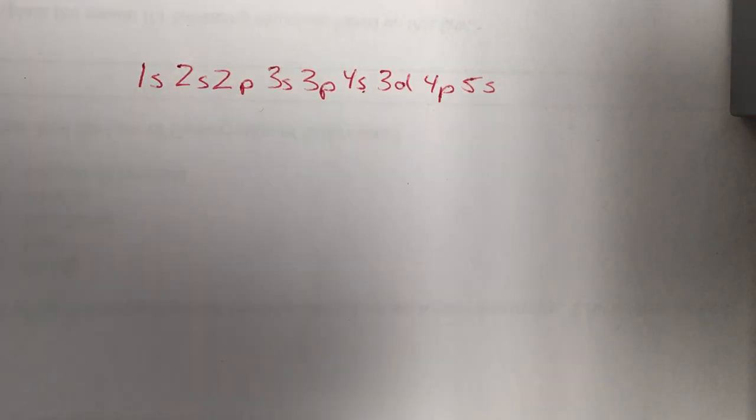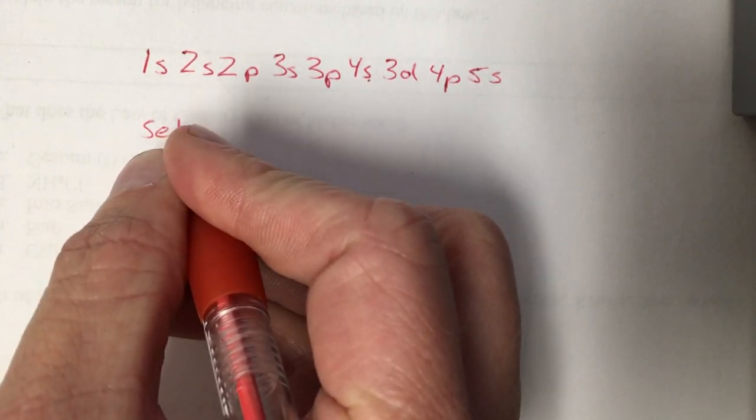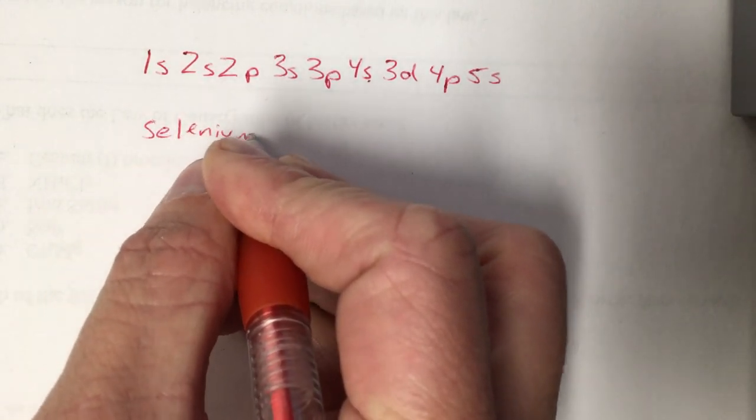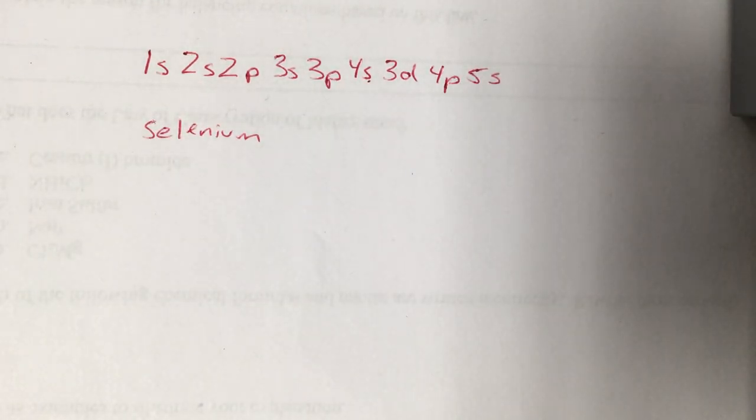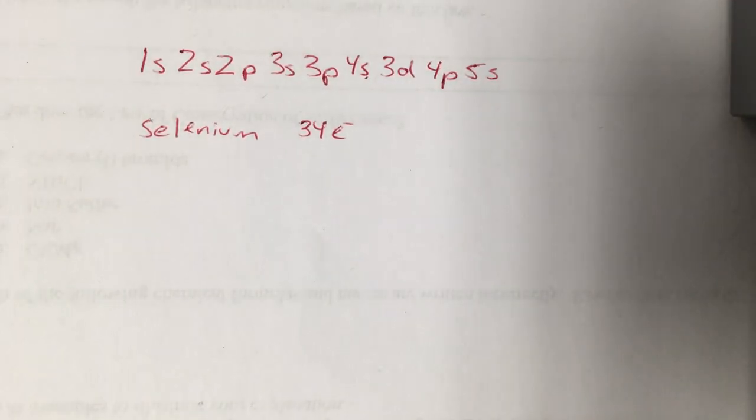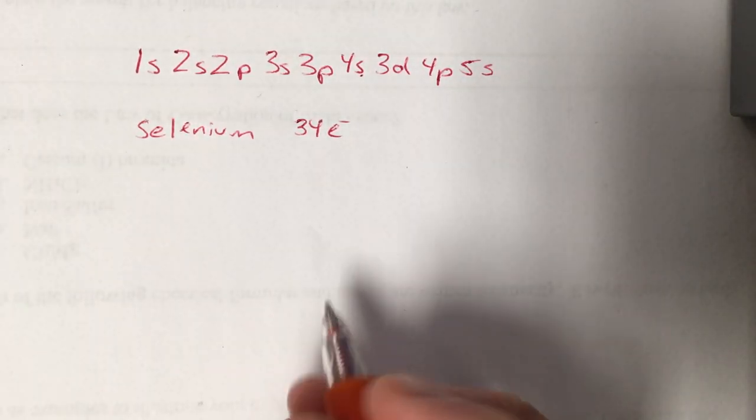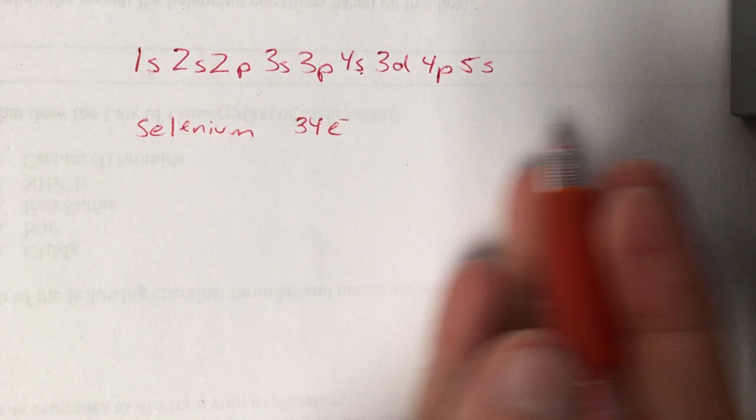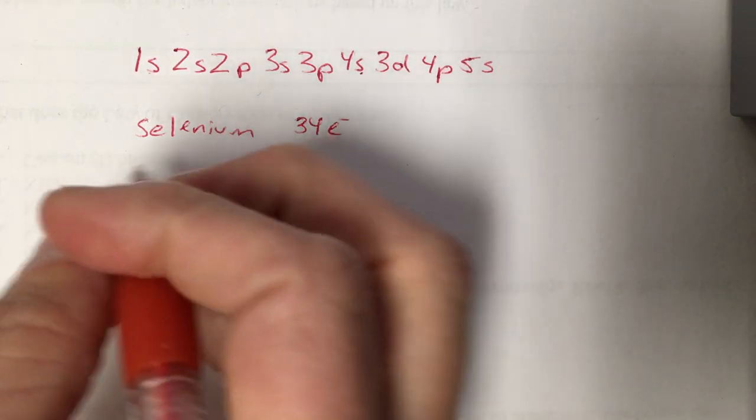So let's do a quick electron configuration. Let's do the electron configuration for a nice big one this time. Let's do it for selenium. Selenium is atomic number 34. That means it has 34 electrons for us to put in the electron configuration. So we just start at the beginning and we work our way across until we put 34 electrons away.